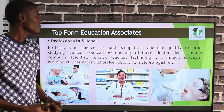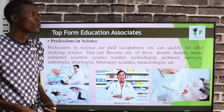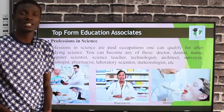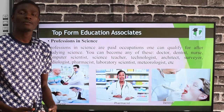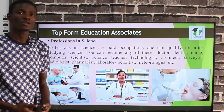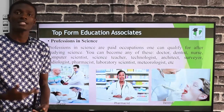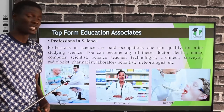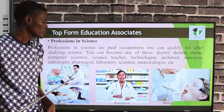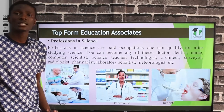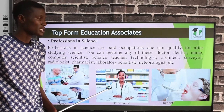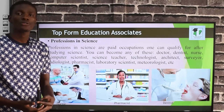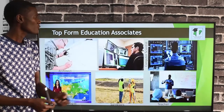Professions in science are paid occupations one can qualify for after studying science. Some of these professions include: doctor — as you can see, a doctor is a profession in science. Pharmacy — this is a pharmacist. And dentistry — these are all in the medical line and are professions in science.